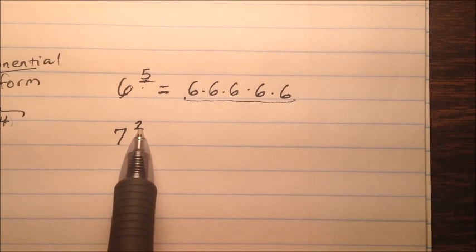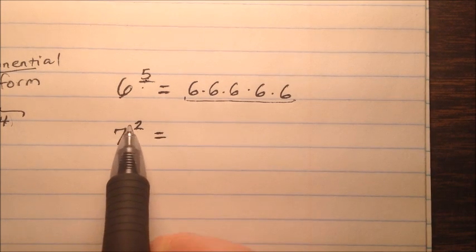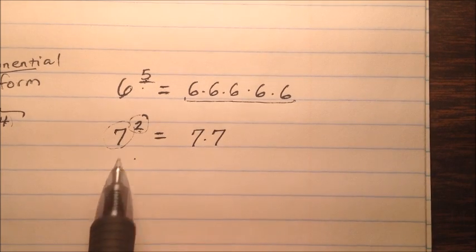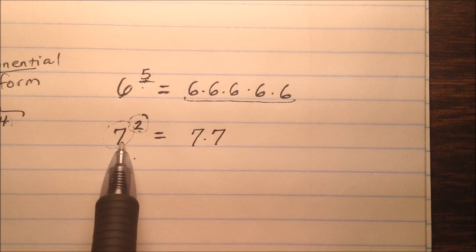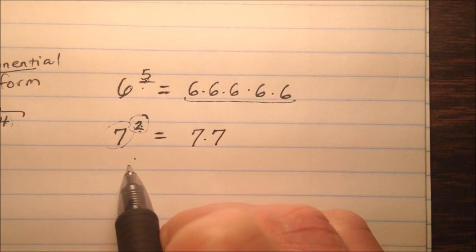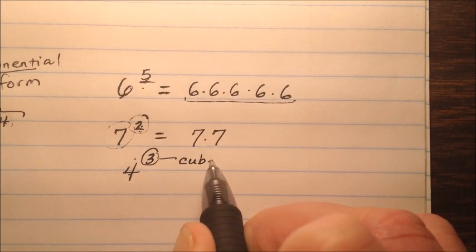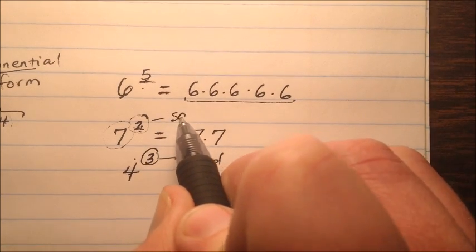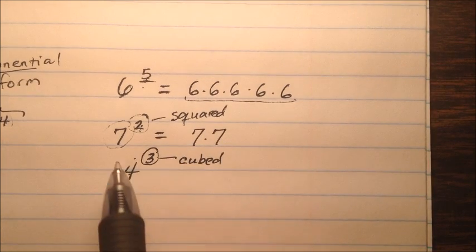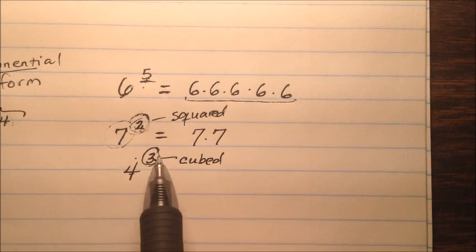My other one is seven to the power of two, or you could say seven squared. That's going to be seven multiplied by itself two times, because that two indicates how many sevens we have. Seven squared is a special word we use when we have a base to the power of two. We also have four cubed — cubed means to the power of three, and squared means to the power of two. Those are the only two that have special names.